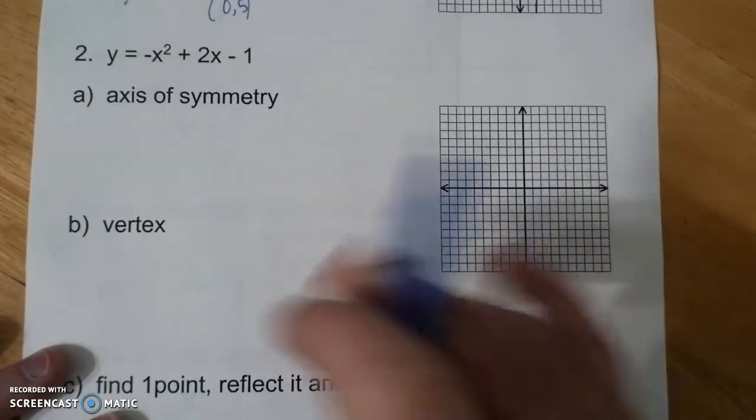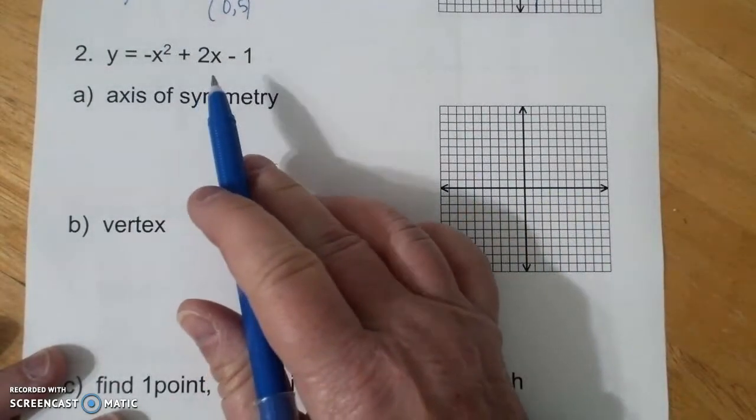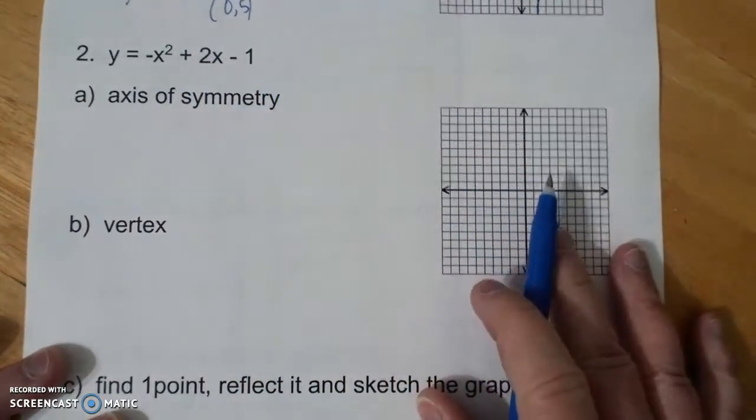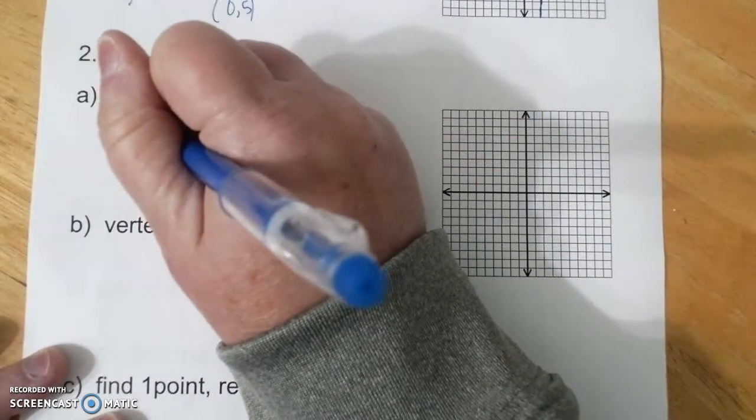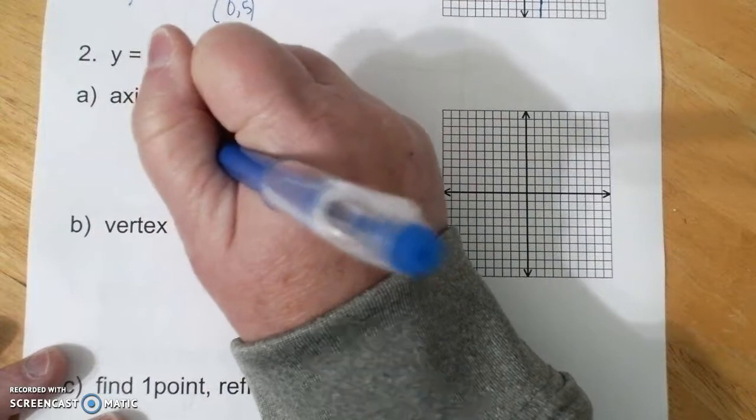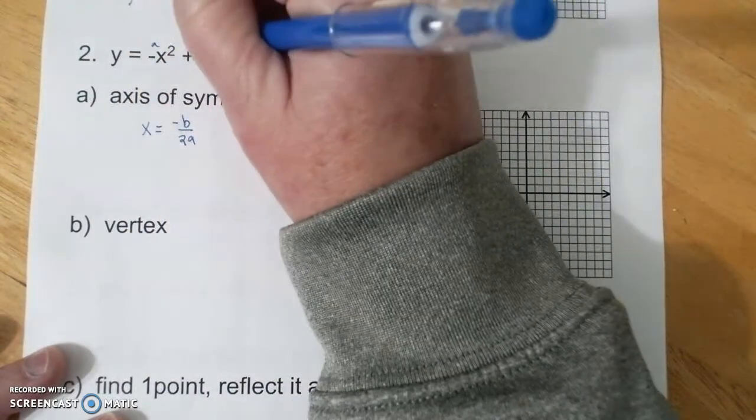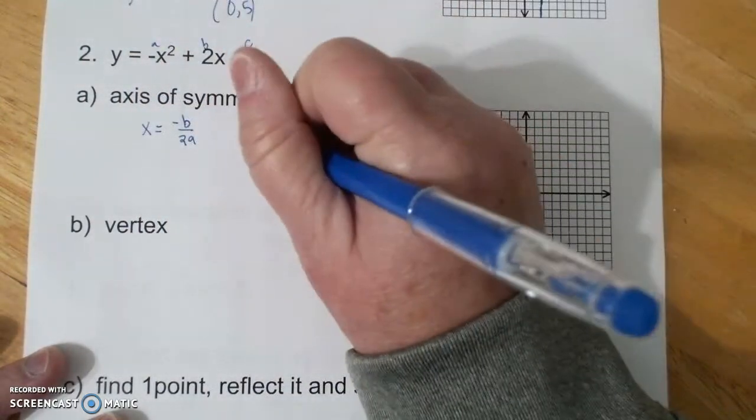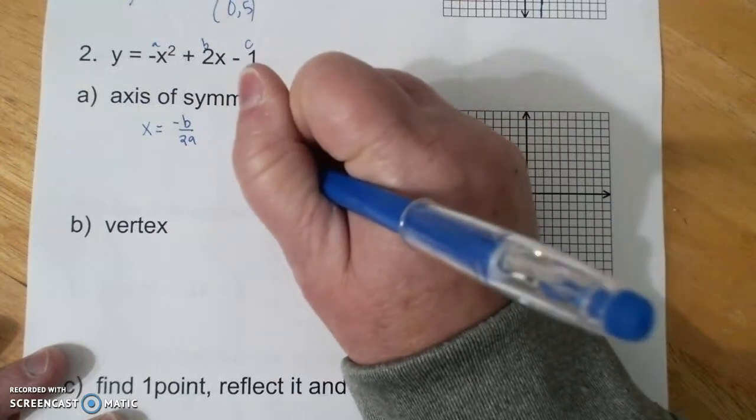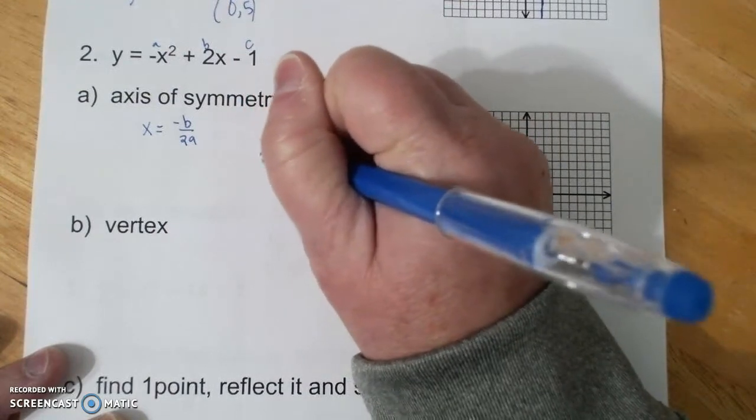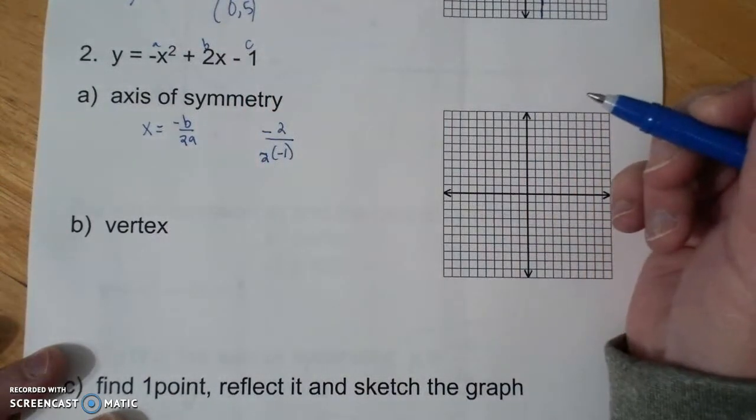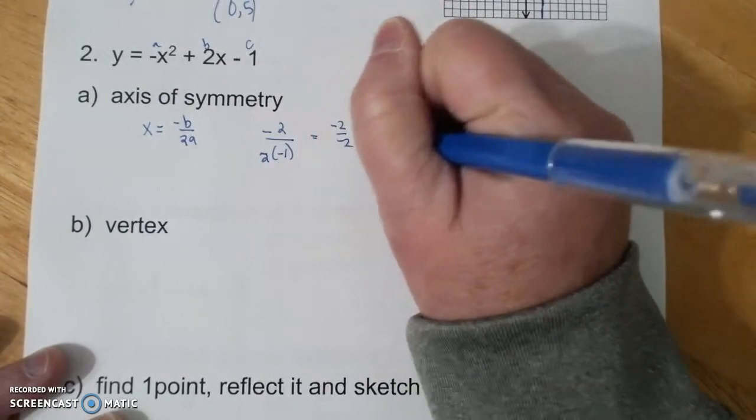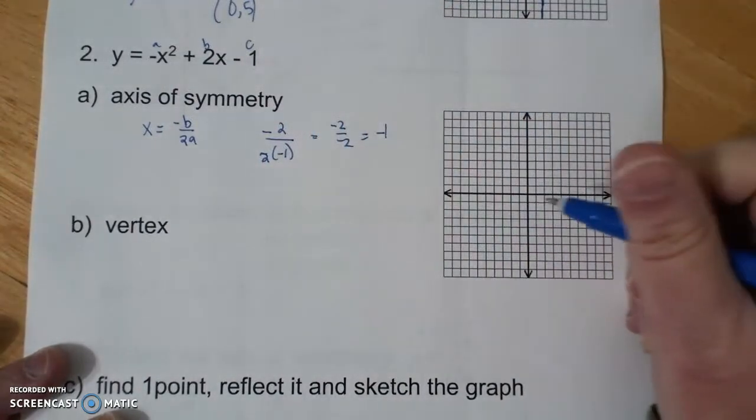Next one. y equals negative x squared plus 2x minus 1. Axis of symmetry: x equals opposite of b over 2a. Here's my a. Here's my b. Here's my c. Opposite of 2 over 2 times negative 1, which becomes negative 2 over negative 2, which becomes negative 1.